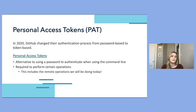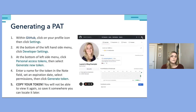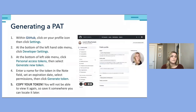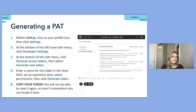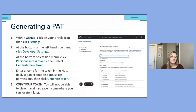In 2020, GitHub changed their authentication process from password-based to token-based. Now, to perform certain actions with the GitHub API or command line, users are required to use personal access tokens. Personal access tokens can be generated through GitHub and are an alternative option to using a password for authentication.